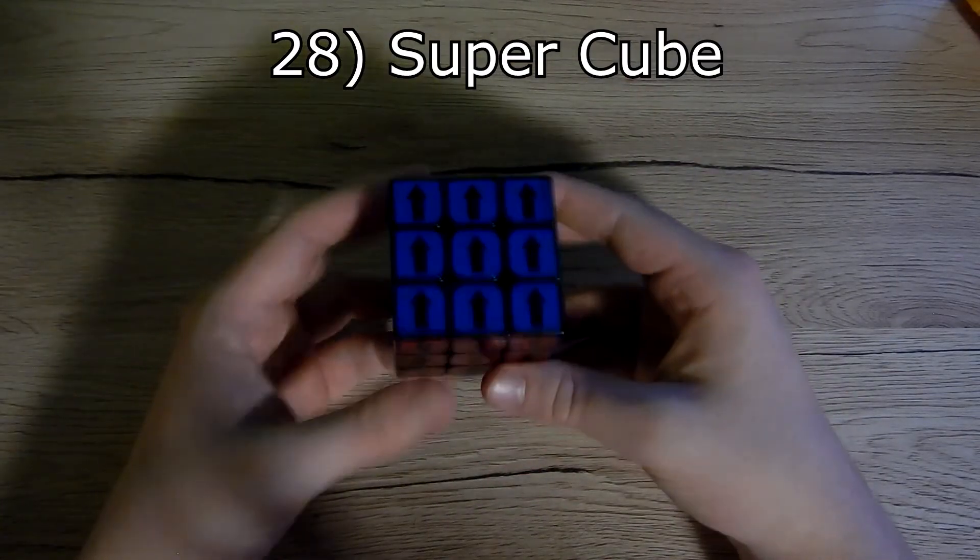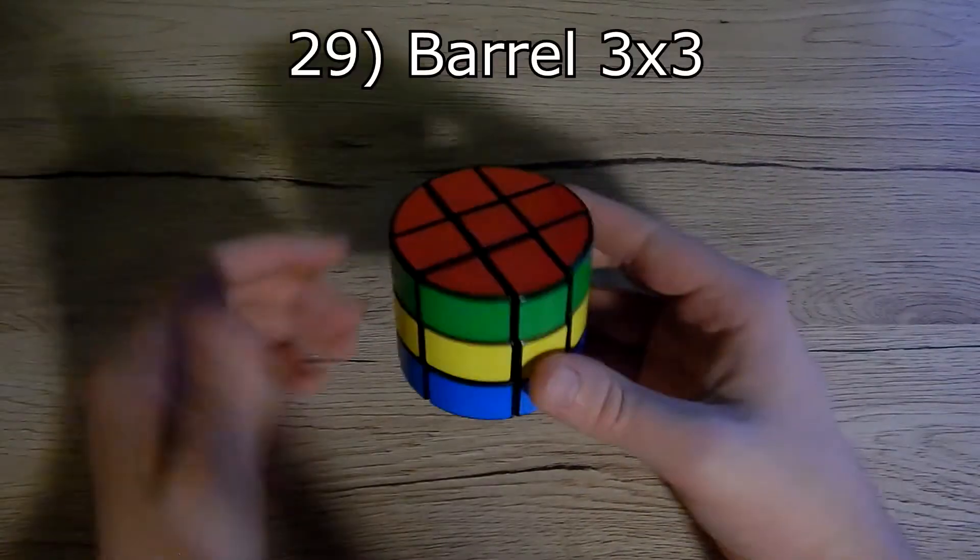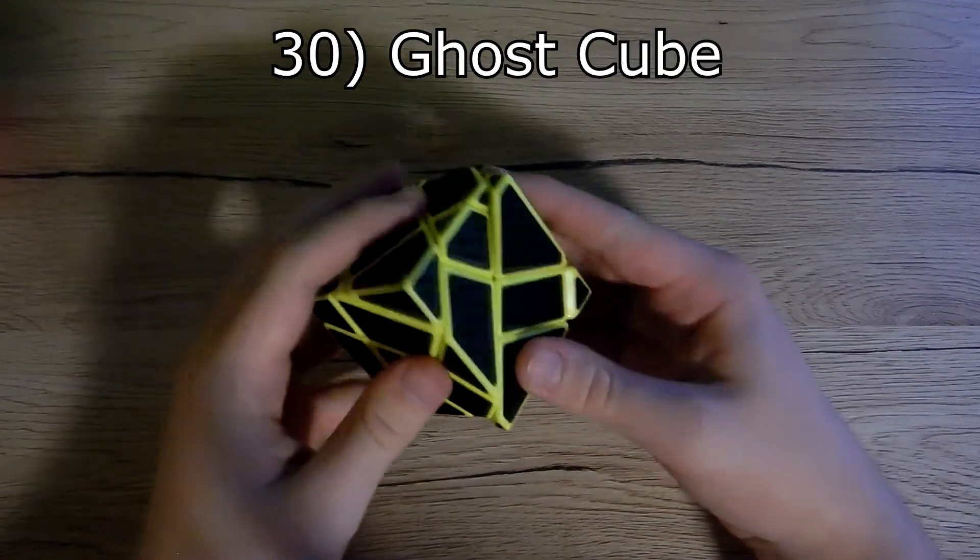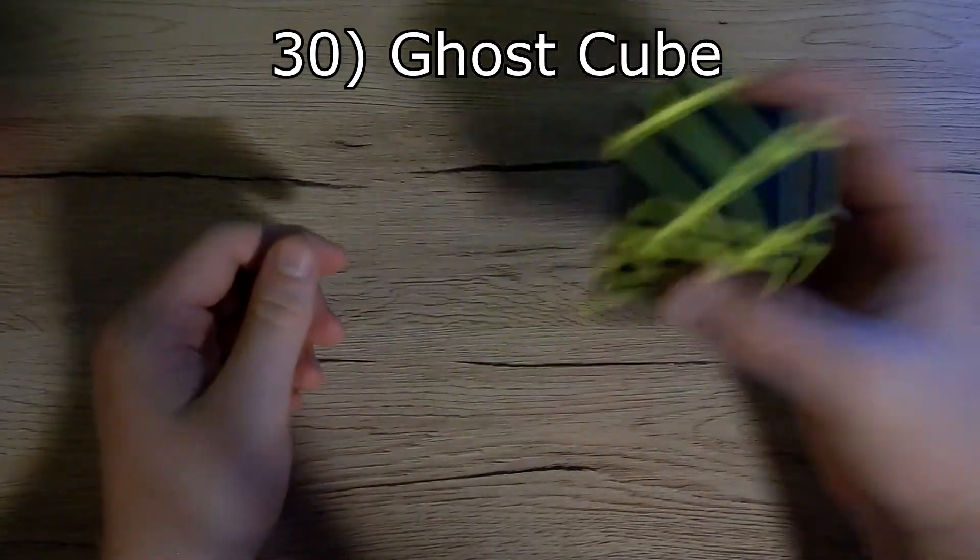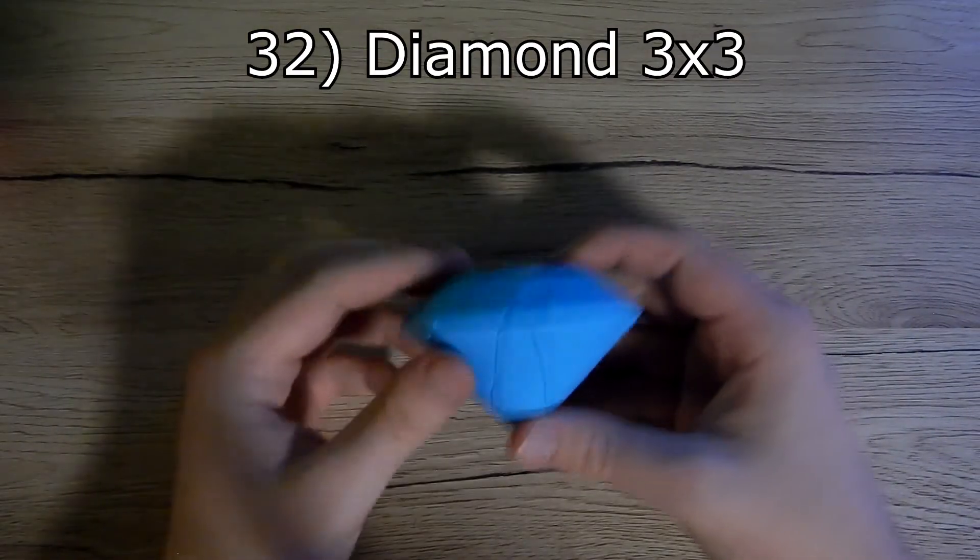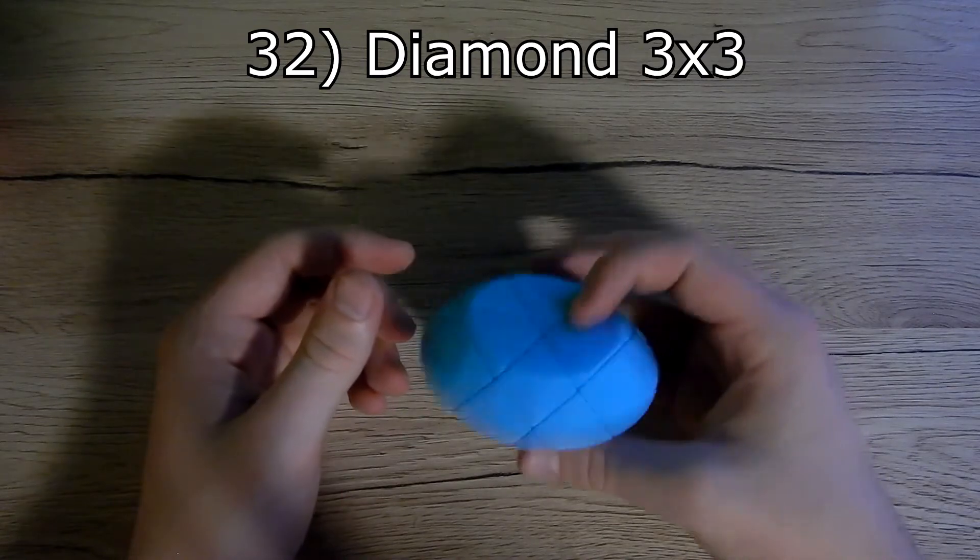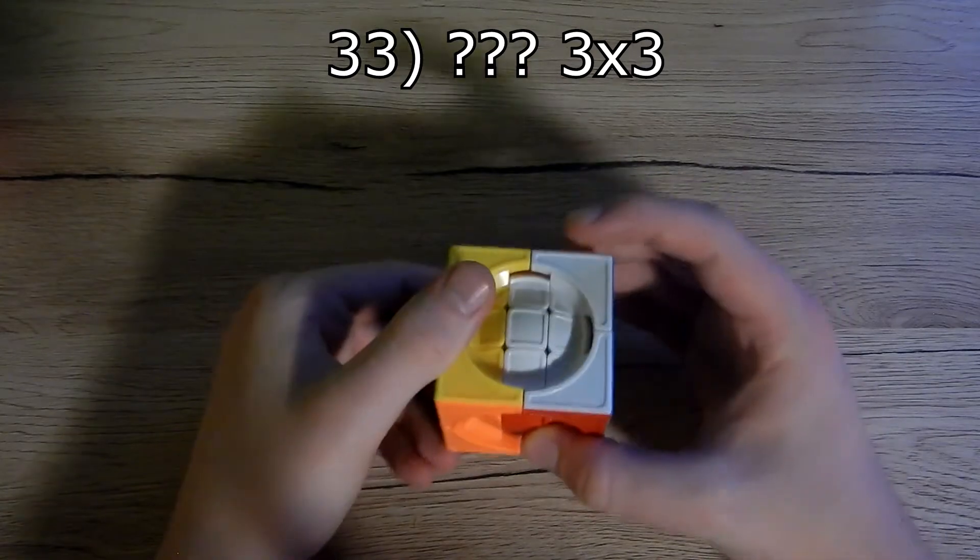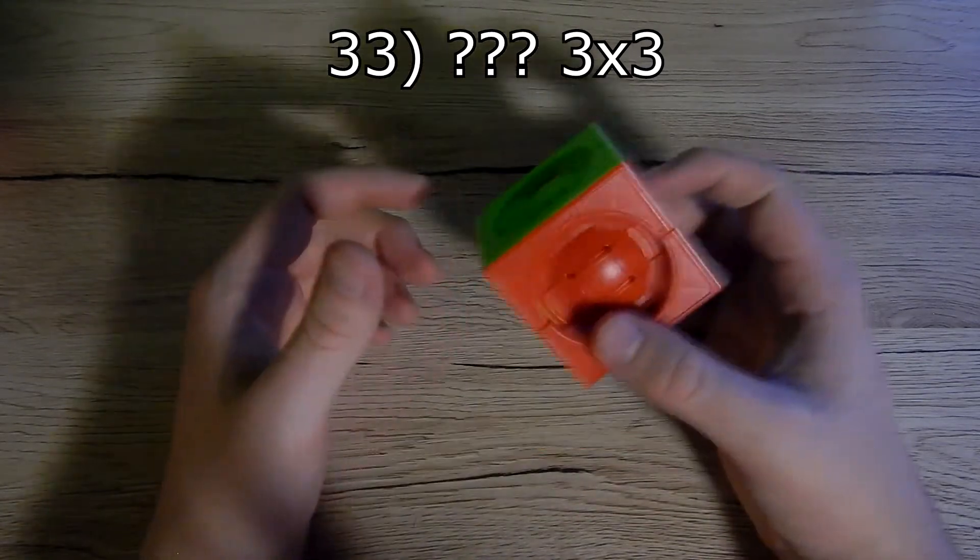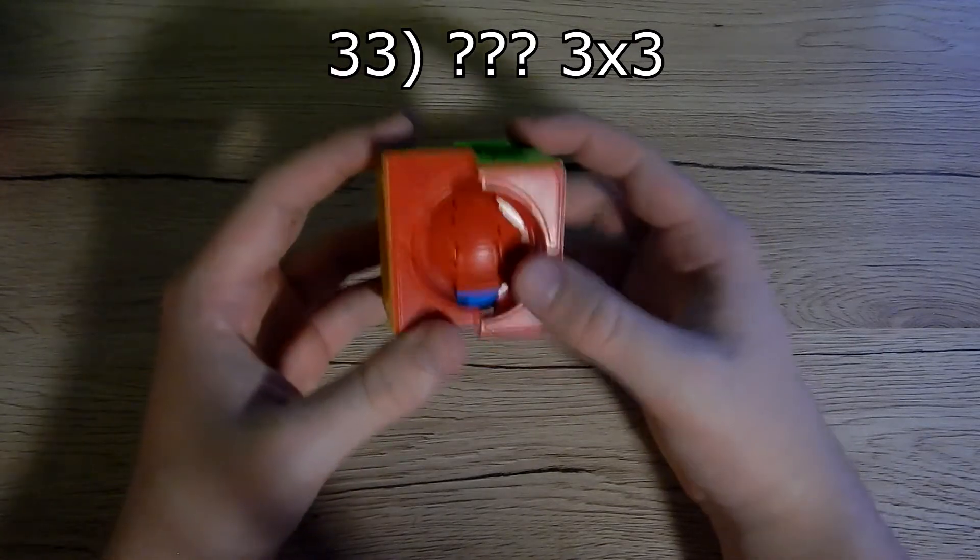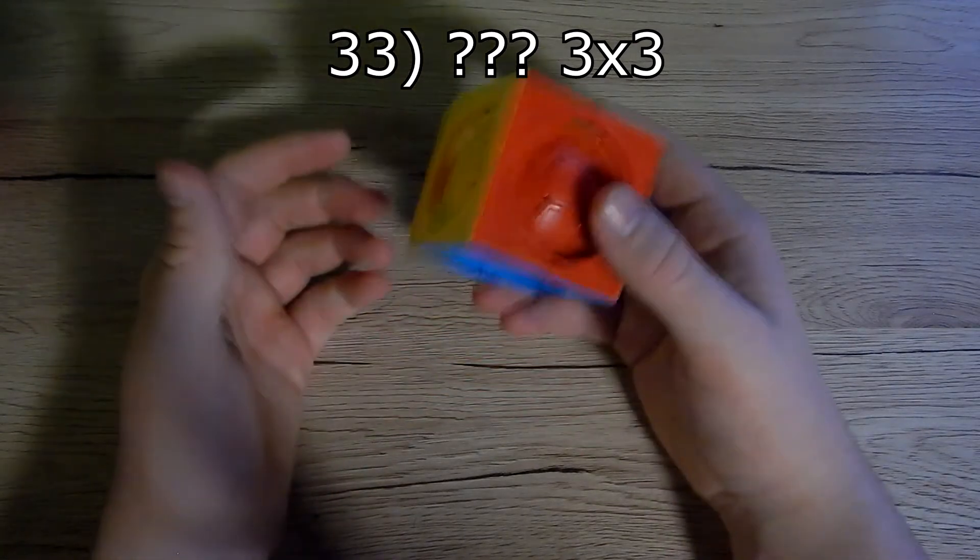Before we start 3x3 shape mods. 3x3 mirror ghost cube. I like this one but it's very hard. Gold mirror cube. Diamond 3x3. It's cool to have it in my collection. This 3x3 which I hate. It was the worst buy I ever did because it's horrible.